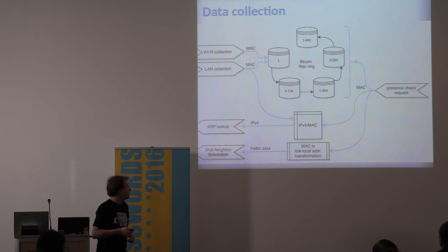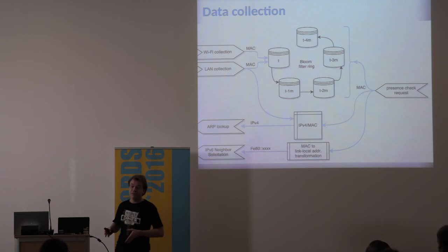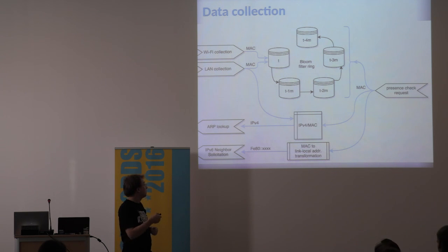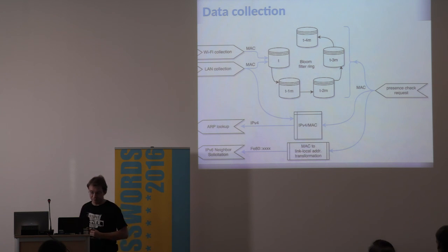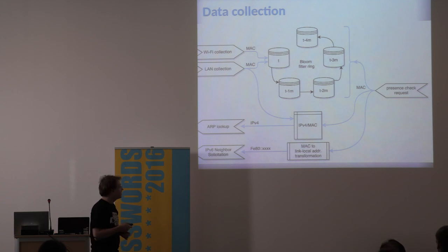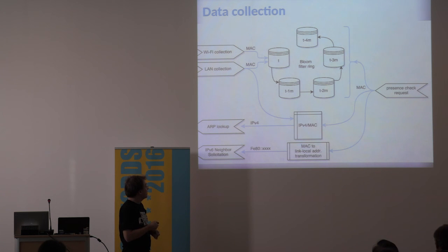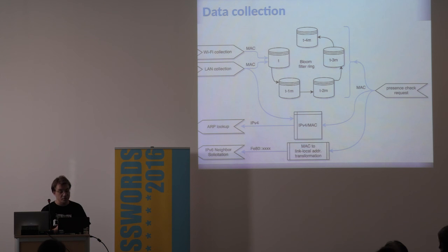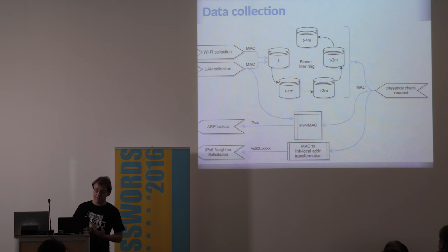We use a ring of bloom filters and start a new bloom filter every minute. Every time we need to do a presence check, we simply check all the bloom filters. After five minutes, we discard the oldest one. For active probing, we can also use DHCP and ARP lookups. Since we want to implement this in embedded systems, it's constant time and constant space.